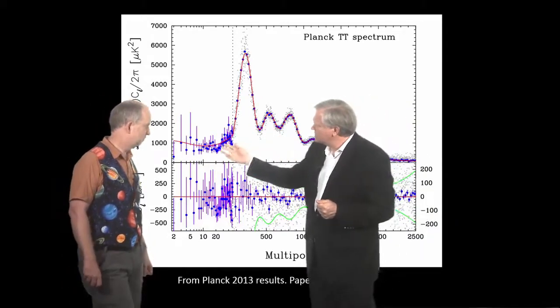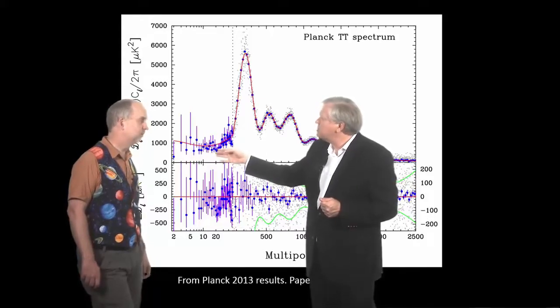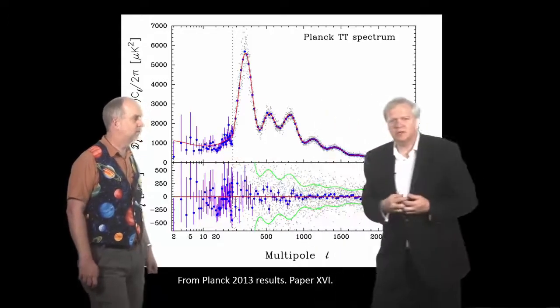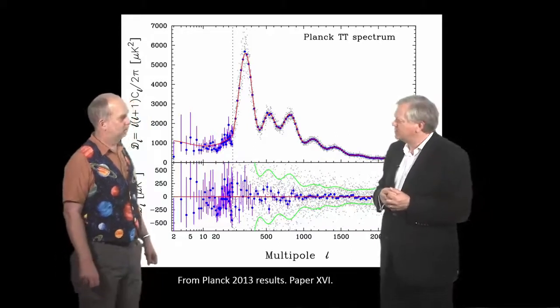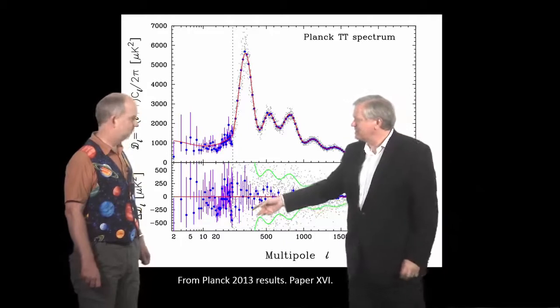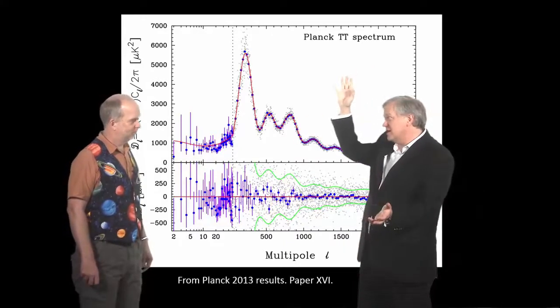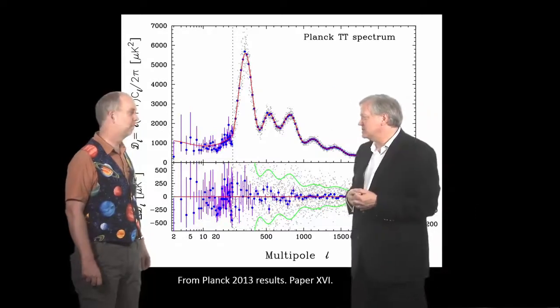So for whatever reason, it appears there were just the quantum fluctuations seem to be missing on that scale compared to what you expect at other scales. But the problem is that's 20 degrees, so you don't get very many of them across the sky, which ultimately means there's a lot of uncertainty.